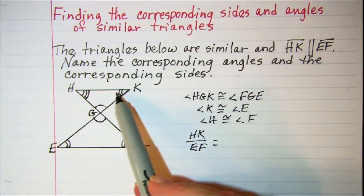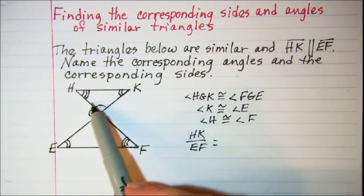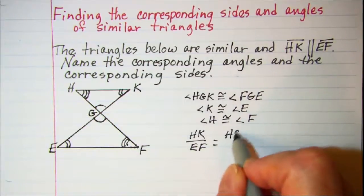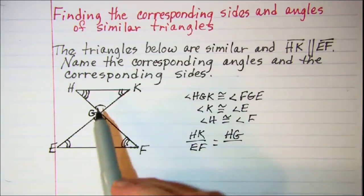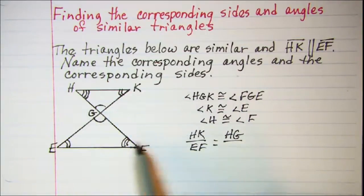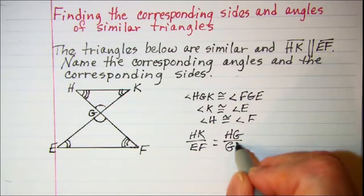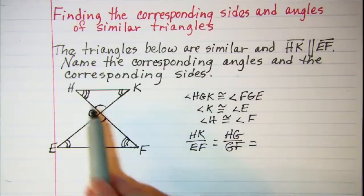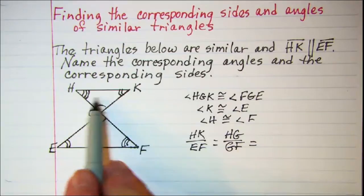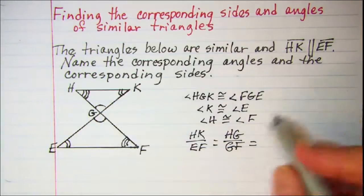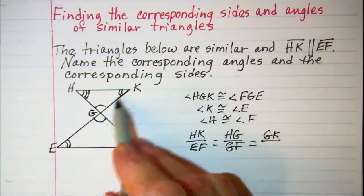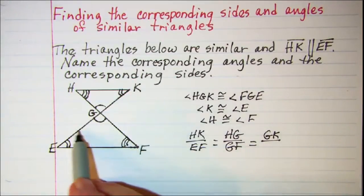Then across from our double-notched angles we have HG is proportional to GF. And then across from our triple-arced angles we have GK is proportional to EG.